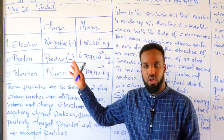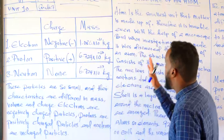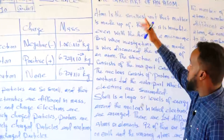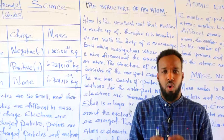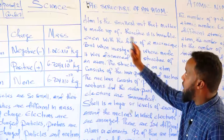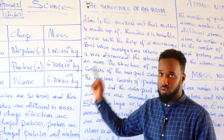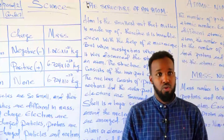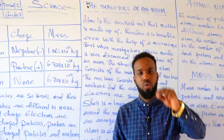Now let's look at the structure of an atom. The atom is the smallest unit. It is like a small electric system. The atom is the smallest unit that matter is made of, and it is comparable in structure to the solar system.